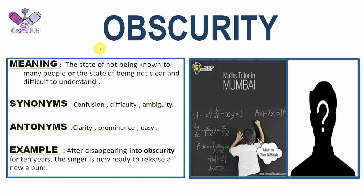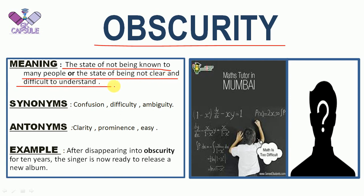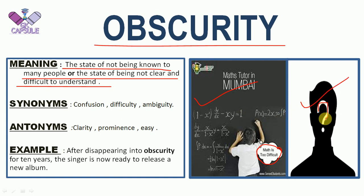The next word of our discussion is OBSCURITY. The meaning of OBSCURITY is the state of not being known to many people, and the state of something being unclear and difficult to understand. In the picture we can see mathematics is very difficult to understand, so we call that an obscurity situation. In the next picture, a person is not known to anyone — that is also an obscurity situation.